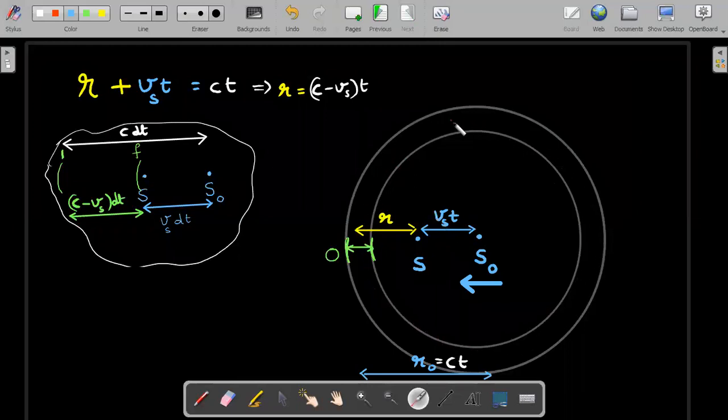In T seconds, the sound that was emitted at T equal to zero would be here, but there is a catch. The source won't be at the center of that sphere. The source would have moved forward to this position. This is the position of the source at T seconds when the sphere of sound has reached this position.